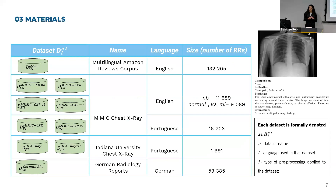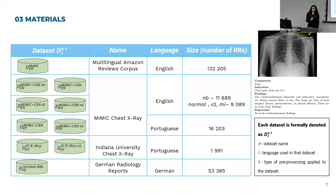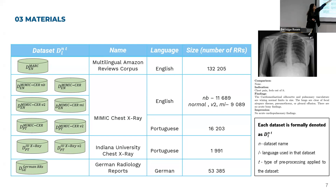Here we have the datasets I used in this project. I start by using the multilingual Amazon review corpus, which contains reviews about Amazon products in different languages, but in this case I only used the ones written in English. Then I also used the MIMIC chest X-ray dataset, which comes in English and is publicly available. As you can see, we have four versions: an unbalanced version, then a balanced version, a balanced version with words separated, and one that uses meta information.